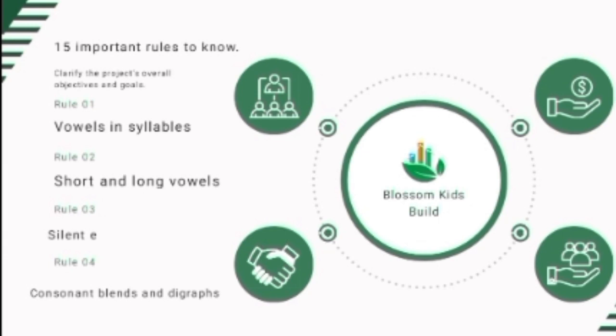Some syllables have more than one vowel, and this vowel combination can create a single sound. For example, in the word 'boat,' the O-A creates one sound — that is a vowel combination. We also have closed and open syllables. A closed syllable ends with a consonant, making the vowel short. For example, 'cat' — the A is closed with a consonant, making it a short vowel sound.